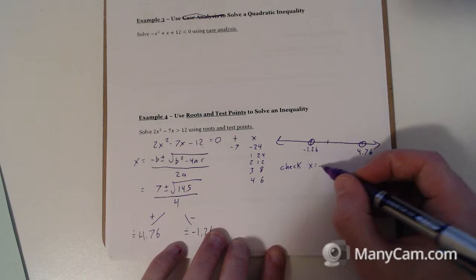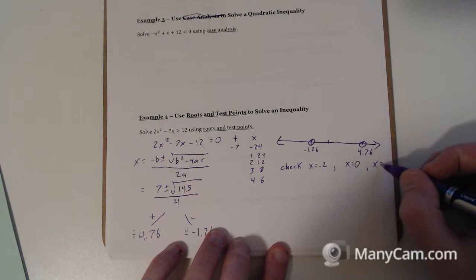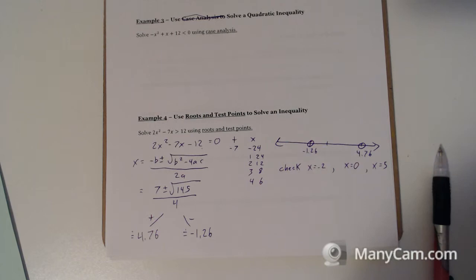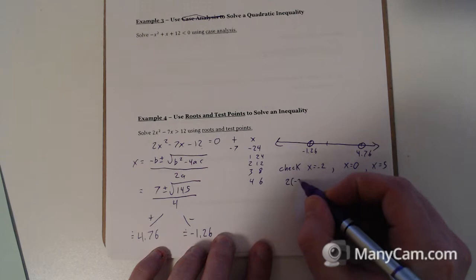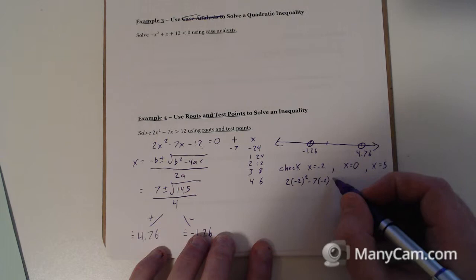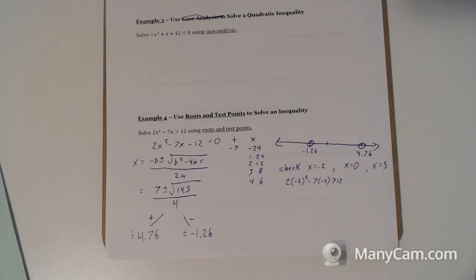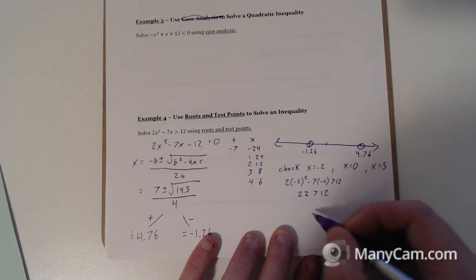So we're going to check x equals negative 2. x equals 0 is a great one to check. And x equals 5. Just any point in each range. And we're going to be subbing it into this expression. So 2 times negative 2 squared minus 7 times negative 2. Is that greater than 12? Well, that's 4, 8, well, I'm going to sub it all in. It's 22, which is greater than 12. Yes. So this part is all a success.